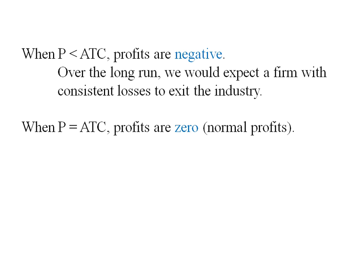When price is equal to average cost, profits are zero. Remember, these are economic profits, and economic profits of zero are normal profits. This firm is probably earning positive accounting profit and covering all of their opportunity costs.